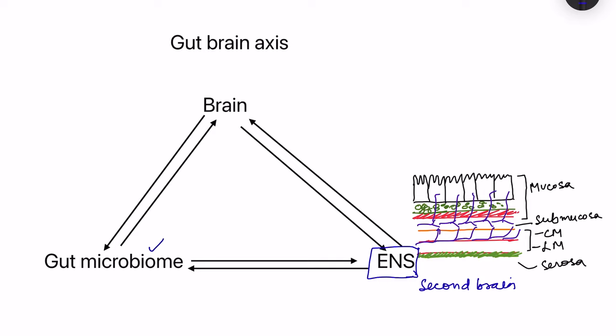The gut microbiome is an ecosystem of various microorganisms present in the gut, living in sync with the cells of our own body. The number of these microorganisms is estimated to be 10 times the total number of cells in the body, so they have a huge role in gut-brain interaction.